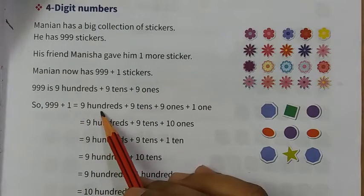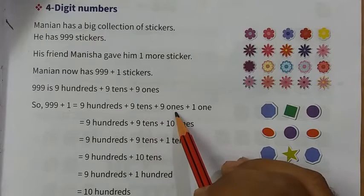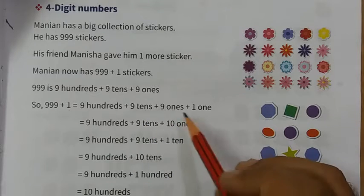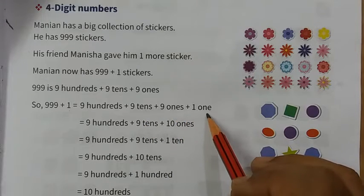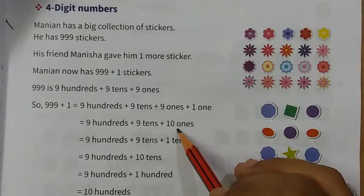What will happen when we add this one? 900, 910 and 9, it will be plus 1. So 9 and 1 is equal to 10.